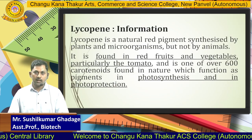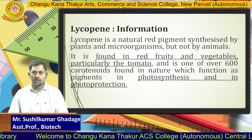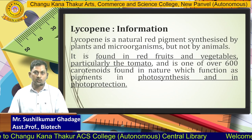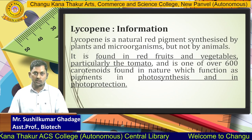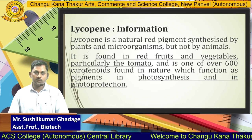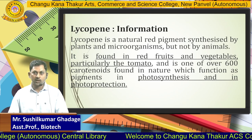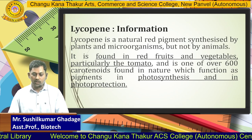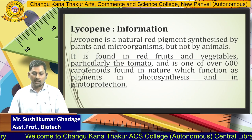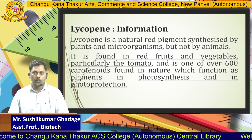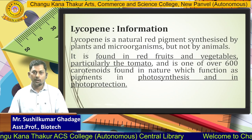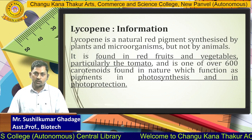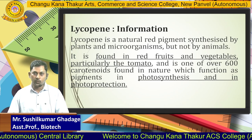Lycopene is a natural red pigment synthesized by plants and microorganisms, but not by animals. It is found generally in red fruits and vegetables, particularly tomatoes. It is one of over 600 carotenoids found in nature, functioning as a pigment in photosynthesis and photo protection, and it can also serve as an antioxidant.